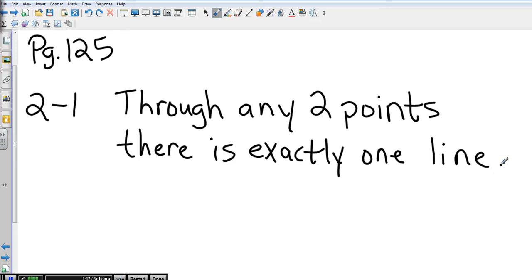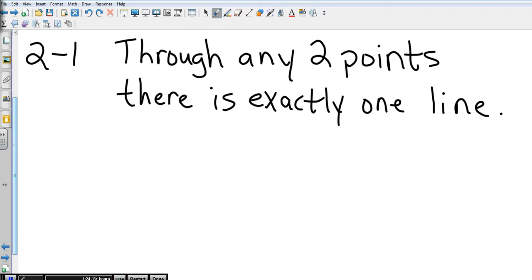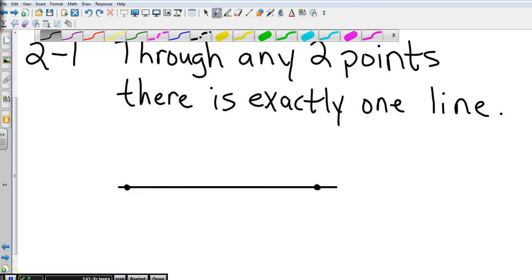Through any two points there's exactly one line. So if I took two points, I can only draw one line through them. There is no other way. So we've got two points and exactly one line through. I can't draw the line any other way.